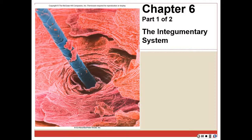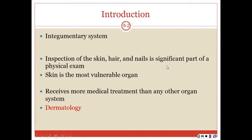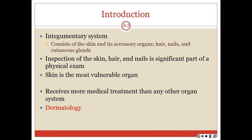We're going to look at Chapter 6. We have two videos for this chapter and we're going to look at the integumentary system. The skin is also known as the integument. The integumentary system includes the skin and its accessories — organs such as hair, nails, and glands.